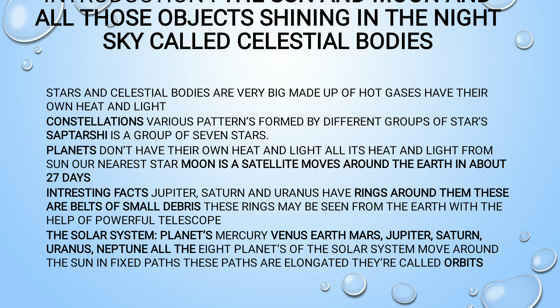The solar system consists of eight planets. The central part is the Sun. These eight planets are: Mercury, Venus, Earth, Mars, Jupiter, Saturn, Uranus, and Neptune. All eight planets move around the Sun in a fixed path called an orbit, and the shape of that orbit is elliptical. Originally there were nine planets, but Pluto was reclassified as a dwarf planet and is no longer considered a full planet.